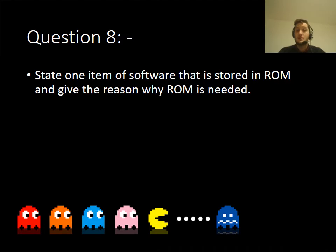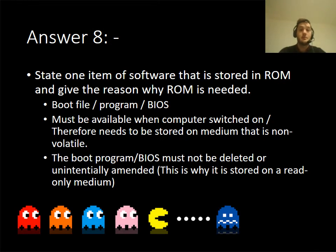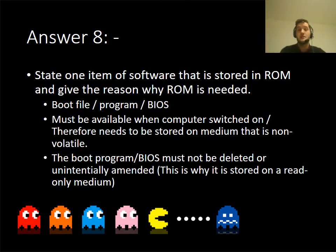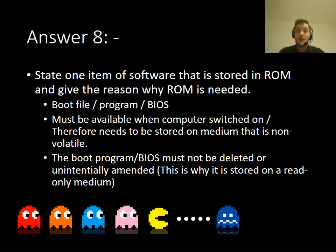One item stored in ROM is the BIOS or the boot file. It must be available when the computer is turned on. On older machines you can see this more clearly — it loads up the boot information and may display the manufacturer name. It gets you ready to load up the operating system. This is why ROM can't be editable: if somebody could edit or change it, it would break your machine.